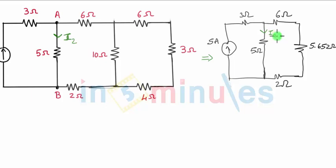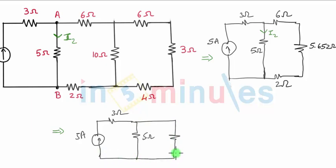You can see one more reduction will give us a final answer. I keep the current source as it is, there's a series resistance with current source of 3 ohm, this is 5 ohm resistance. And now I can replace all these three resistors: 6 plus 2 is 8, 8 plus 5 will be 13.652, and this is my current I2.